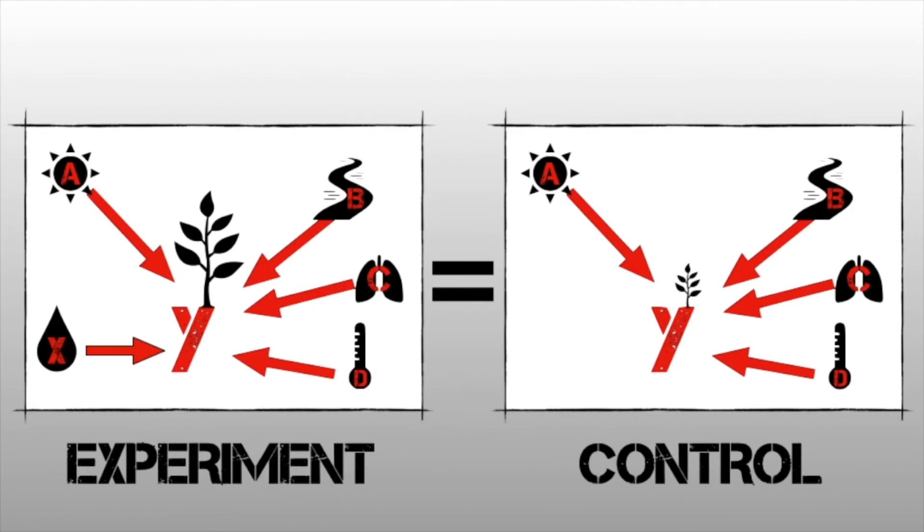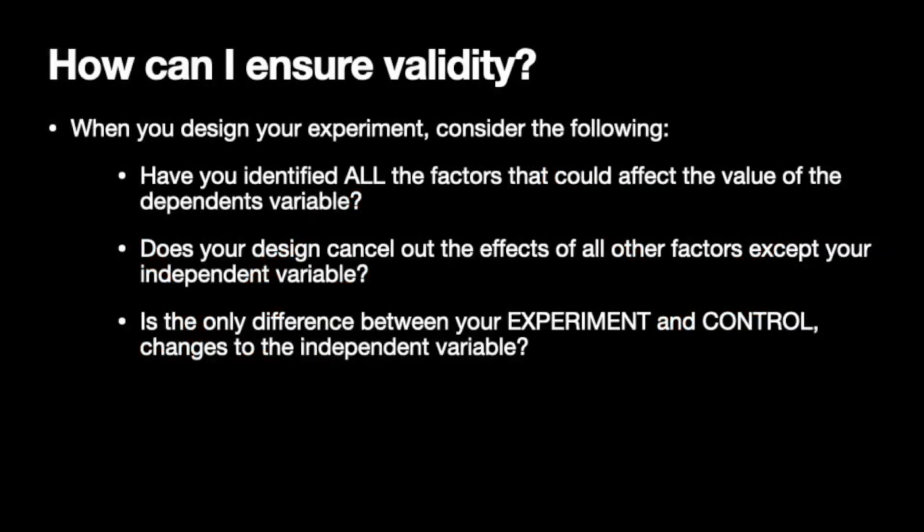So how can I ensure validity in my experiments? Well, when you design your experiment, consider the following. Have you identified all the factors that could affect the value of your dependent variable? Does your design cancel out the effects of other factors, except for your independent variable? And is the only difference between your experiment and control changes to the independent variable?